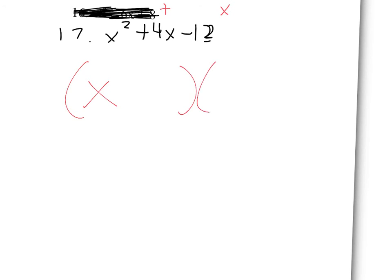So remember, we're trying to add up to a positive 4, and we're trying to multiply up to a negative 12. So we have x, and we have x. We just said our signs are opposites, because that's the only way if we multiply a positive and a negative, we'll get a negative number here. So we're trying to multiply up to a negative 12, so we want our two numbers to add up to a positive 4.